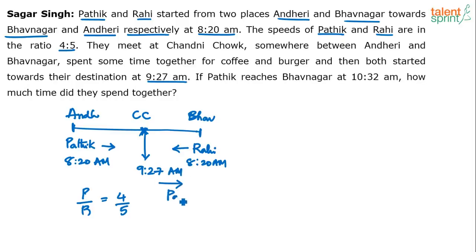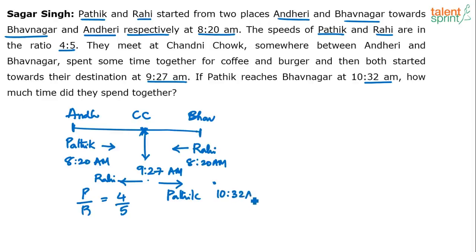Pathik will continue from the meeting point towards Bhavanagar, and Rahi will continue towards Andheri. Now Pathik reaches Bhavanagar at 10:32am. They started at 9:27am from Chandni Chowk, and Pathik finally reaches his destination at 10:32am. The question is: how much time did they spend at the meeting point at Chandni Chowk for their coffee and burger?